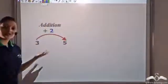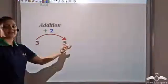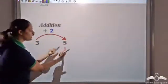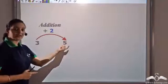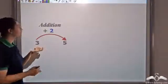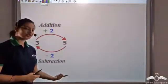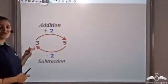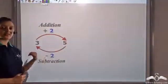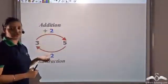We had also seen the operation of addition. So if I add two to three, I get five. Now what is the way of coming back to three from five? If I take away two from five, I would get back to three. That is subtraction. So subtraction can be seen as a reverse operation of addition — if addition takes me forward, subtraction takes me back. Subtraction is undoing the operation of addition.